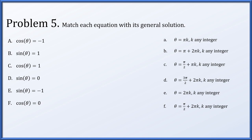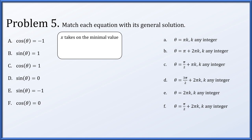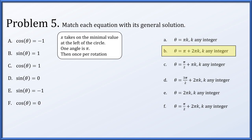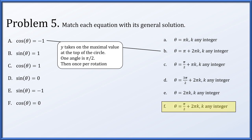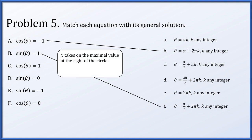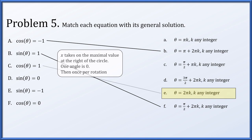In problem 5, we match six equations to their solutions. For cosine of theta equals minus 1, the x-coordinate is at its minimum at the left side of the circle, angle pi, occurring once per rotation. Solution: pi plus 2 pi times any integer k — that's option b. For sine of theta equals 1, the y-coordinate is maximum at the top, angle pi over 2, once per rotation. Solution: pi over 2 plus 2 pi times k — option f. For cosine of theta equals 1, x is maximum at the right, angle 0, once per rotation. Solution: 0 plus 2 pi times k — option e.